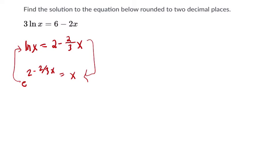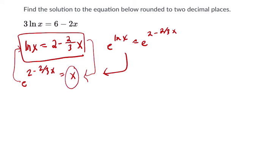I could even try saying, well, for this step right here, if I raise the base, use e, e to the ln of x equals e to the 2 minus 2/3 x, that's just going to get me right back here as well. e to the ln of x is just x. Okay, we got that here. And then that still equals e to the 2 minus 2/3 x.